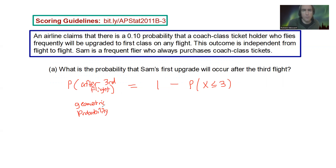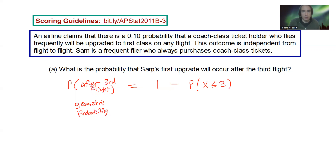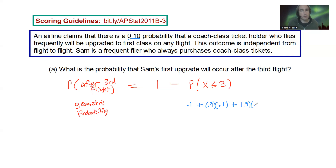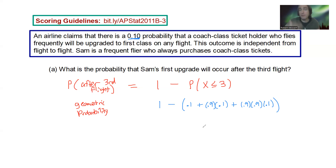How do we do geometrics? You can do them by hand or using your calculator. Geometric means you fail until you get your desired result. Getting it on the first try is 0.1. Not getting it the first time but getting it on the second is 0.9 × 0.1. And on the third flight: 0.9 × 0.9 × 0.1. So if you take that sum away from one, that covers everything above the third flight. That calculation gives you 1 minus 0.271, which is about 0.729.